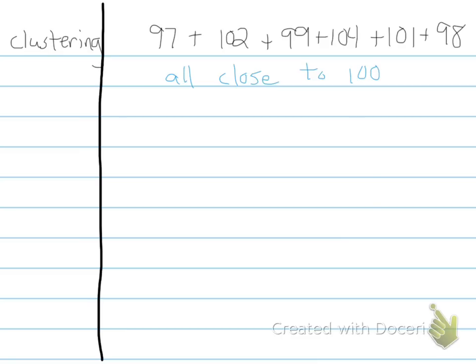If we were to go back and say, 97, that's close to 100. 102 close to 100. 99, 104, all these are close to 100. So we have 1, 2, 3, 4, 5, and 6. So all these close to 100, we're going to get about, the sum would be about 600 since there are 6 of them.